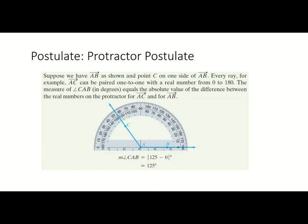Here we have the protractor postulate, which is similar to finding distance. Anytime you have an angle, instead of matching it to a number line, we match it to parts of a protractor — that's how you find how many degrees your angle is. We always start at zero: ray AB is zero degrees and ray CA is 125 degrees using the inside numbers, so the measure would be 125 degrees.